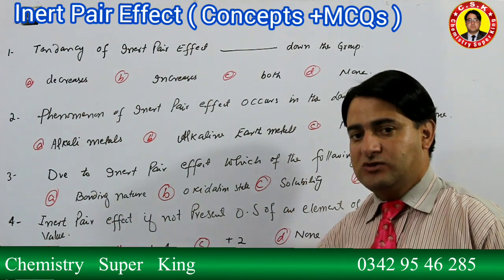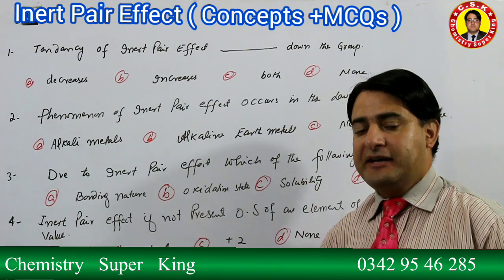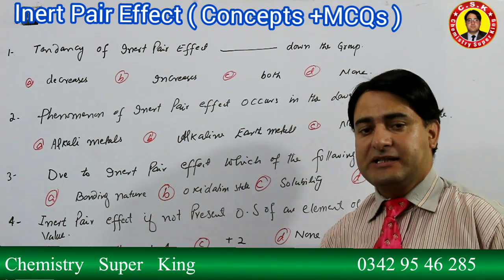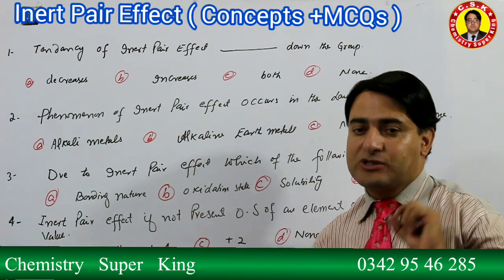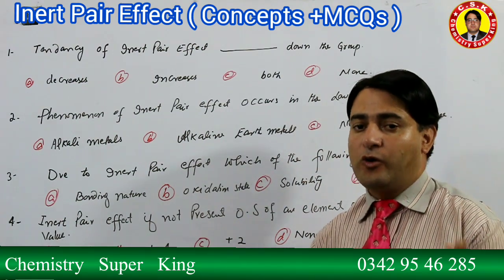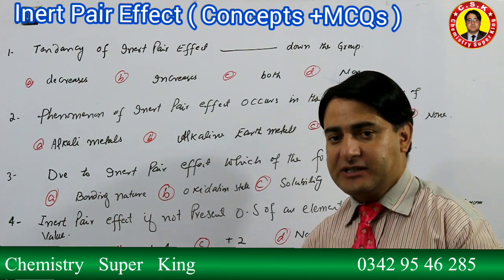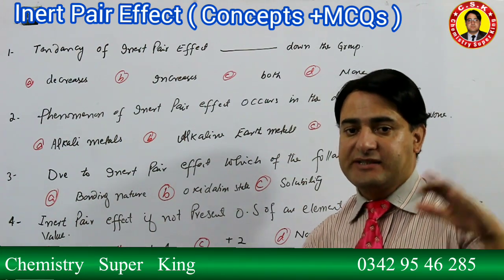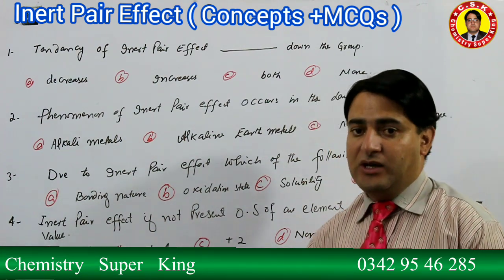Remember students: as we go down a group, the Inert Pair Effect tendency increases. Simply put, the Inert Pair Effect tendency in 4s is less, in 5s it is more, and in 6s it is even more. As the period number increases, the Inert Pair Effect increases.